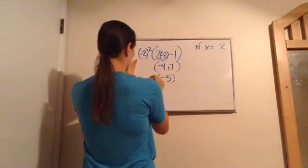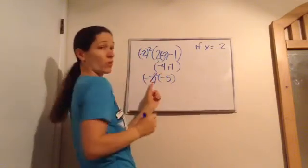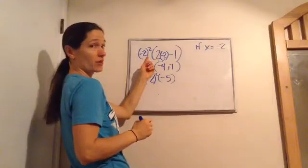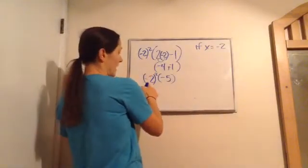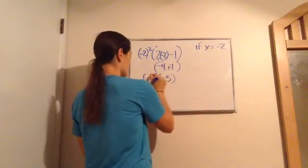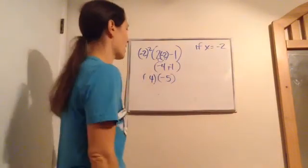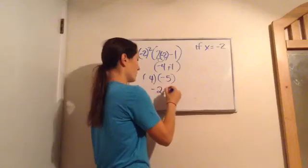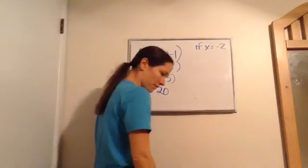And then we bring this part down. 2 squared. Negative 2. That's important that I still have that parentheses there. So this is negative 2 times negative 2, which is positive 4. And then that's positive 4 times negative 5. Negative 20. Get that? All right.